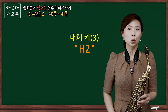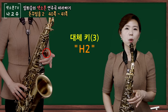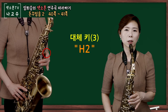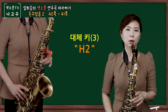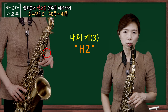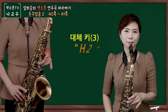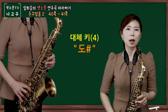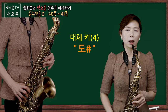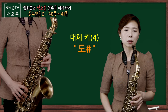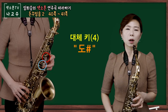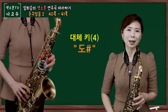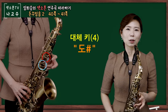그런 후에 도, 레, 도의 형태가 되겠습니다. 도를 운지한 상태에서 H2 키를 눌렀다가 떼주시면 되겠습니다. D 메이저를 보시면 레밀의 도샵 레는, 레를 운지한 상태에서 왼손 첫 번째, 두 번째 손가락만 열어서 도샵을 연주해 주시면 되겠습니다. 레밀의 도샵 레.